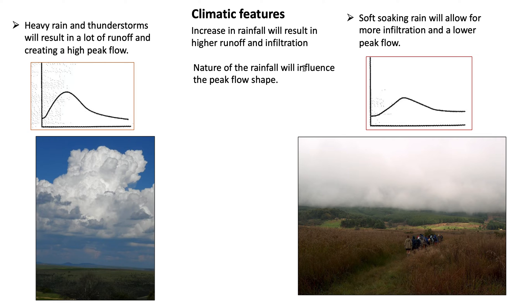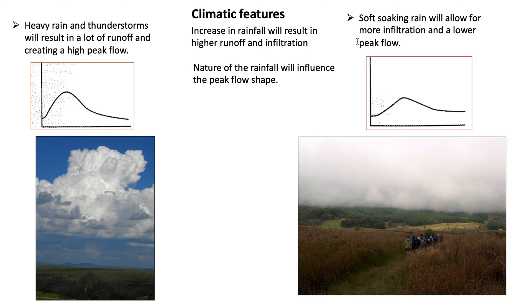Looking at climatic features: heavy rain and thunderstorms will result in a lot of runoff, creating a high peak flow. An increase in rainfall will result in high runoff and infiltration. The nature of rainfall will influence the peak flow shape — soft, soaking rain will allow for more infiltration and a lower peak flow.